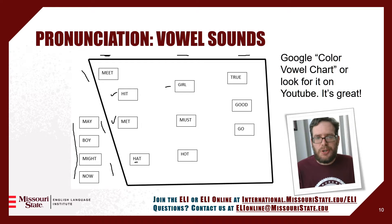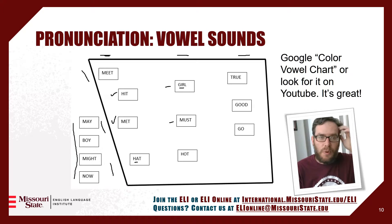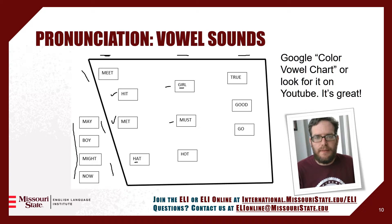Then we have the ER sound, like in girl — this is kind of an UH and then an R sound together. So if you have an R in the middle of the word, a lot of the time we make this ER sound. For ER, your tongue needs to curve back: ER. In the middle, for some words and lots of unstressed vowels — we'll talk about that later — it's the UH sound, like in must: UH, must.